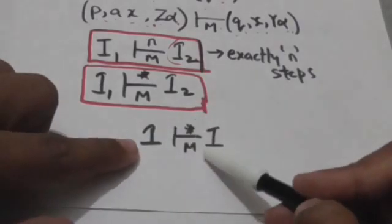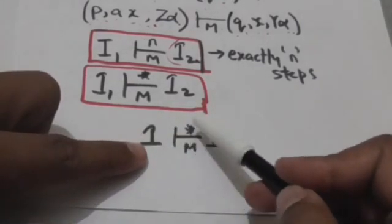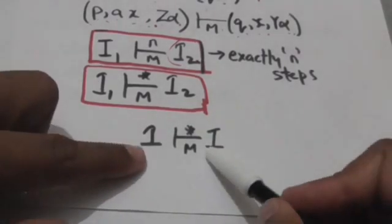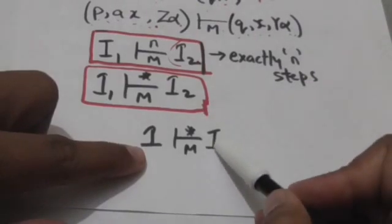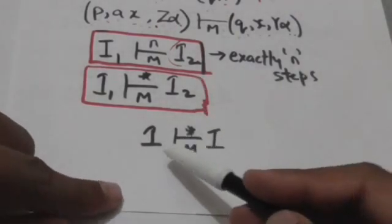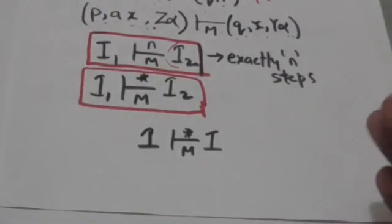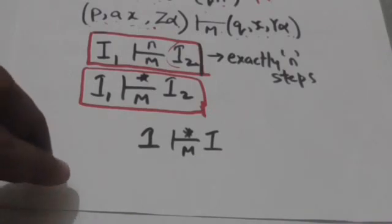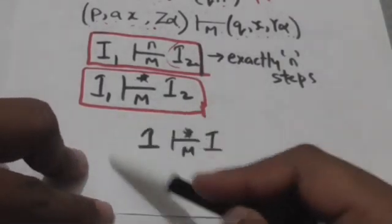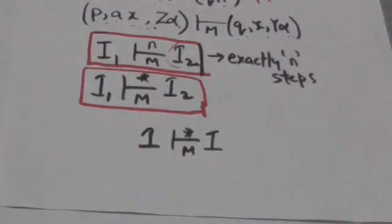All instantaneous descriptions of pushdown automata M can be related with themselves by this star symbol, because in zero number of steps it will remain at the configuration it is presently in. So all instantaneous descriptions can be related with themselves by this symbol. Thank you very much.